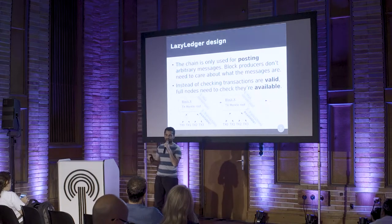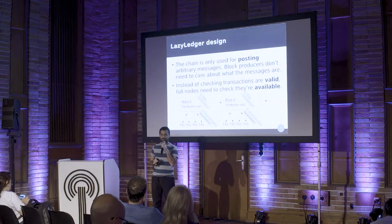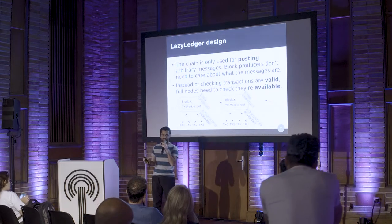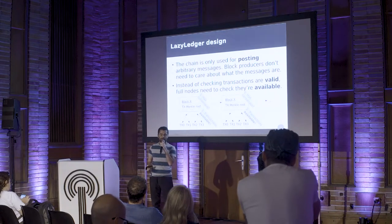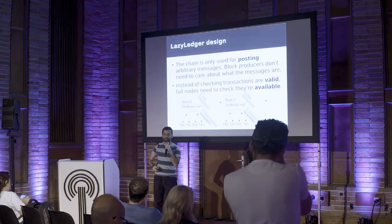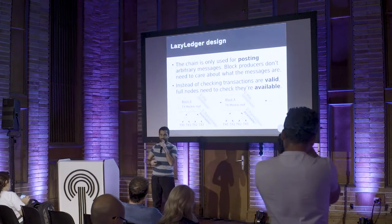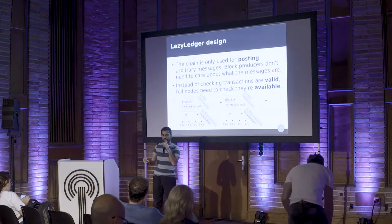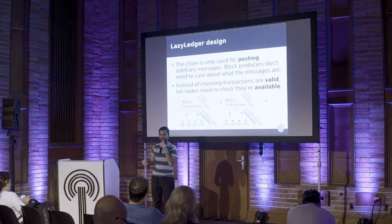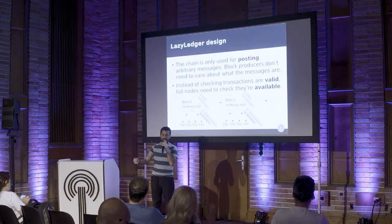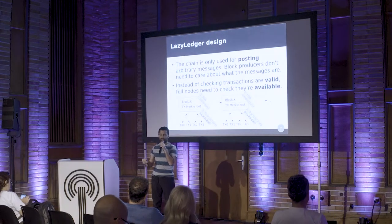I consider this to be the basic bare-bones version of a blockchain — the minimum viable product you need to build a basic functioning blockchain that you could use to build applications on top of, like a cryptocurrency. In this model, instead of checking that every single transaction is valid, what nodes need to do to verify that blocks are valid is simply check, when they receive a new block header, that all the data behind that block header is actually available and has been published to the network.